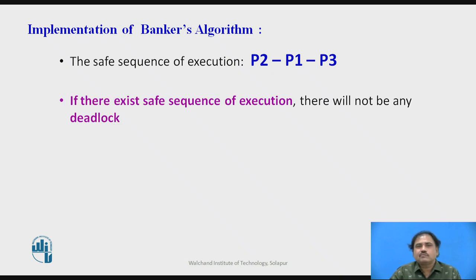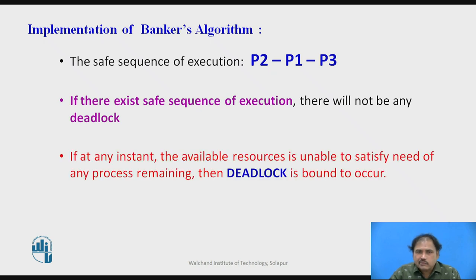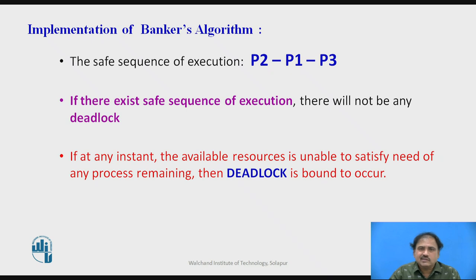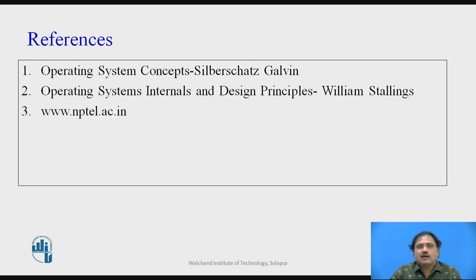If you get a safe sequence of execution, there will not be any case of deadlock. But if you do not get any safe sequence — meaning the available resources are not able to execute any process — that is a case of deadlock. When there is no safe sequence in the system, deadlock is bound to occur. This is the Banker's Algorithm. Thank you for watching.